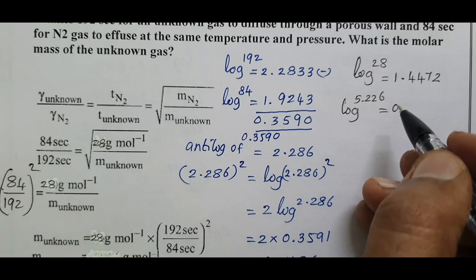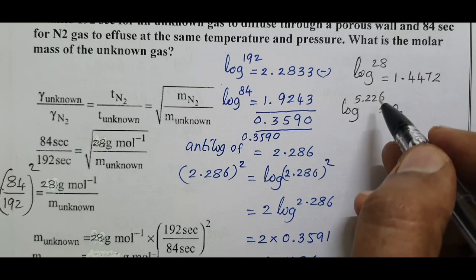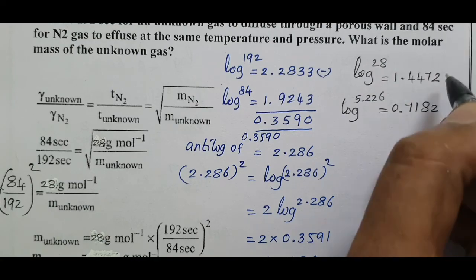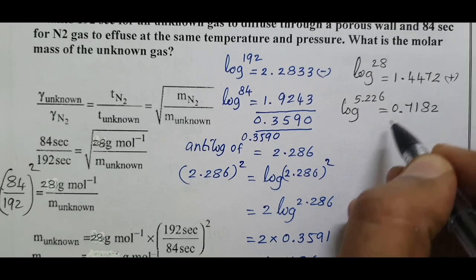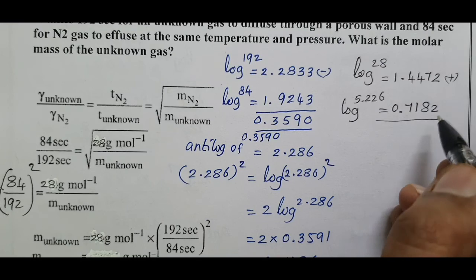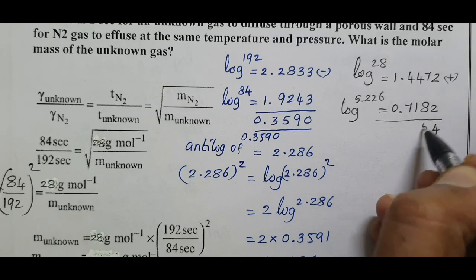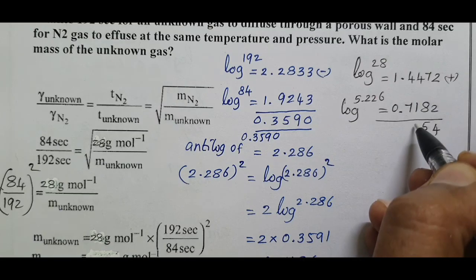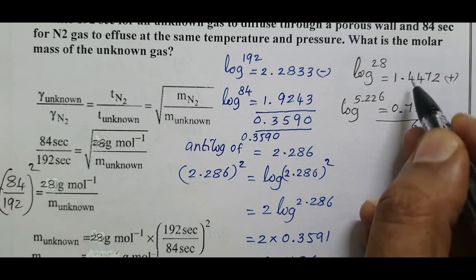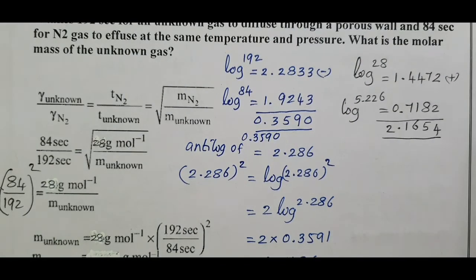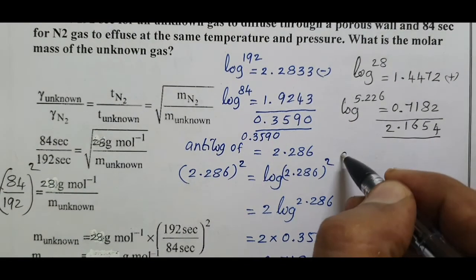28 times 5.226. If you multiply them, 8 plus 7 equals 15 remaining 1, 5 plus 1 equals 6. The result is 2.1654. We look at antilog.